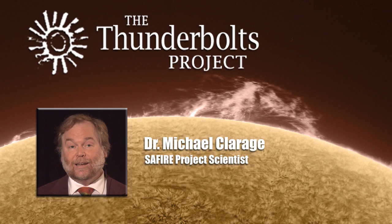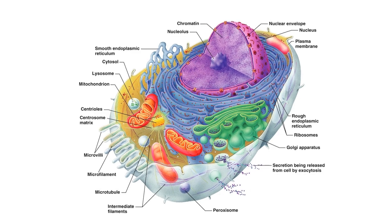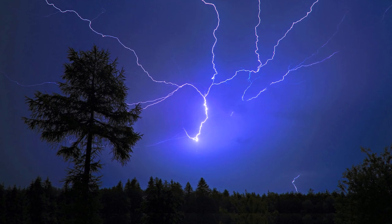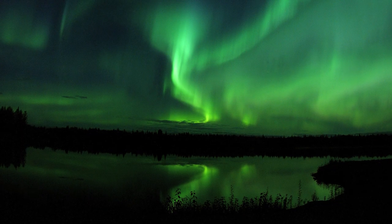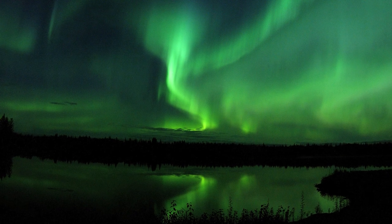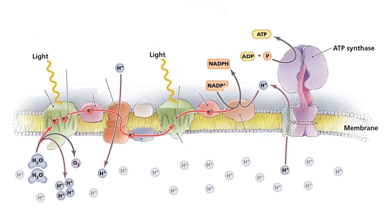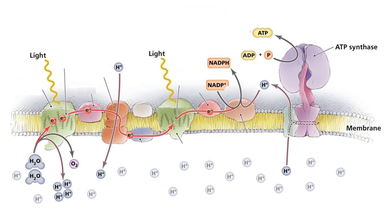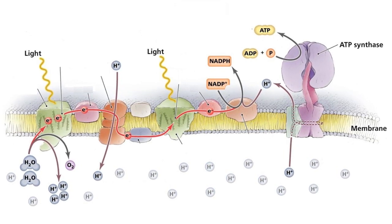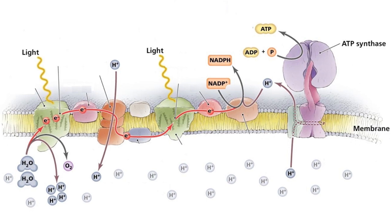I've become convinced that the whole mantra of charge neutrality is preventing us from seeing reality. Nature is almost never charge neutral. If you look at anything interesting in nature — like a cell, or an organelle in a cell, or a tree, or a thunderstorm, or the northern lights — nature is always separating charges. Inside our cells, all the workings of life are powered by charge separations across chloroplast and mitochondria membranes.